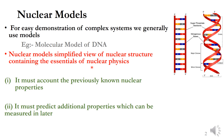A nuclear model should follow these conditions: it must account for the previously known nuclear properties — meaning already known properties should be obeyed by the proposed model — and it must also predict additional properties which can be measured later. These are the essential characteristics of a nuclear model. In this class, we will discuss the shell model.